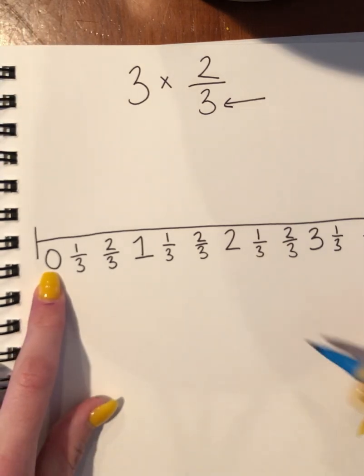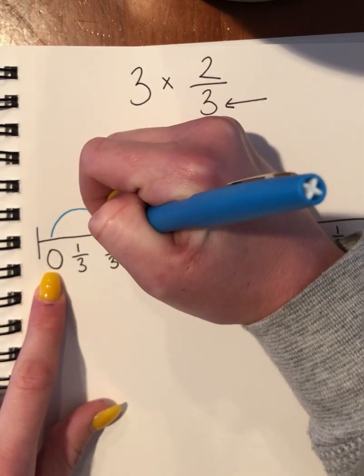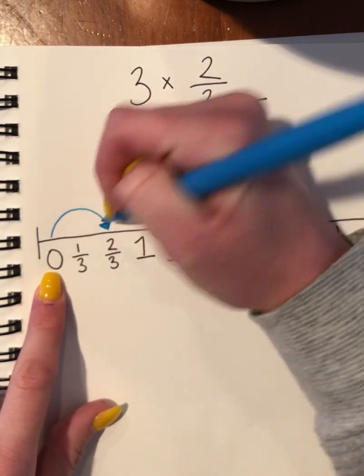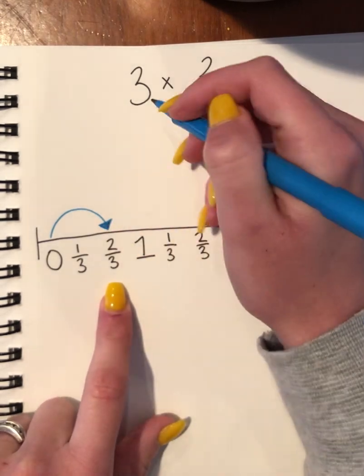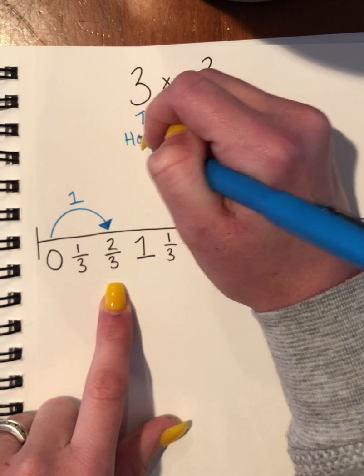I'm starting at zero. I need to go over 2/3, so I jumped 2/3. That's the easiest part. I'm at 2/3—that's one hop. But I need to do three hops, so I'm going to put 'hops.'